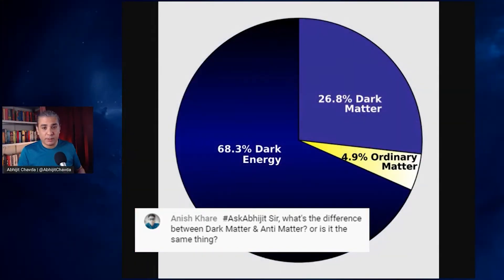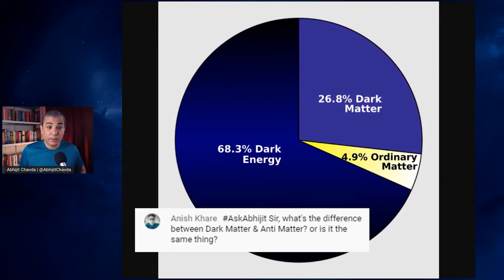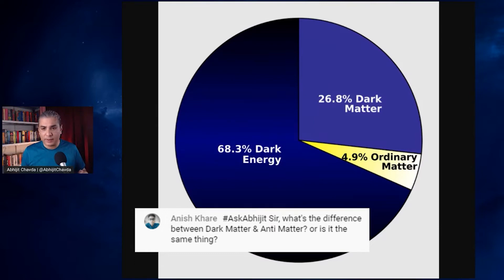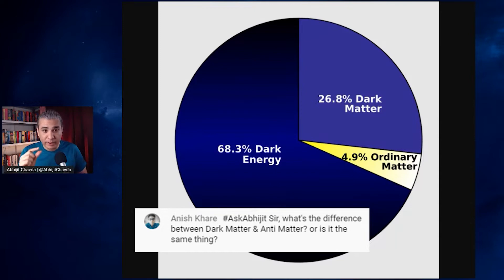So this is the mass-energy composition of the universe. About 4.9% of the universe is ordinary matter — this is everything you can see: all the planets, stars, nebulae, galaxies, and all other luminous matter. This is just 4.9% of the actual universe, so we understand less than 5% of it. More than 95% of the universe is entirely unknown to us.